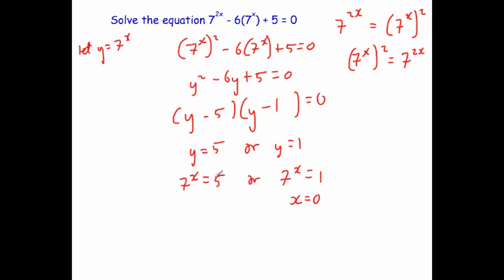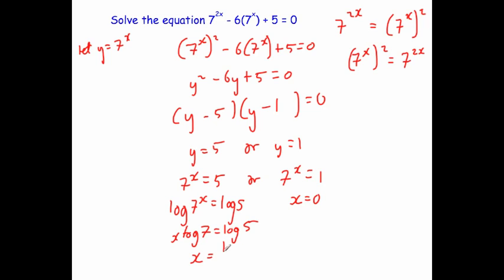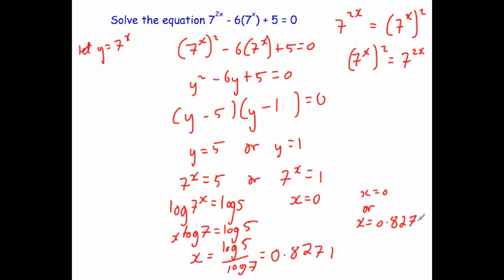For 7 to the power of x equals 5, we take the log of both sides: log(7^x) = log 5. Bringing the power down gives x·log 7 = log 5, then dividing by log 7 gives x = log 5 divided by log 7. Working that out gives 0.8271. So our two answers are x equals 0 or x equals 0.8271.